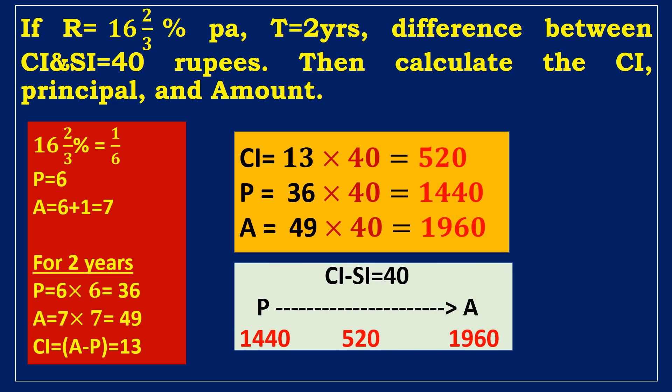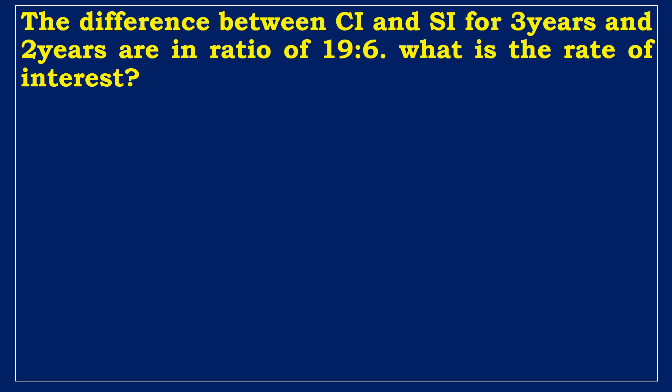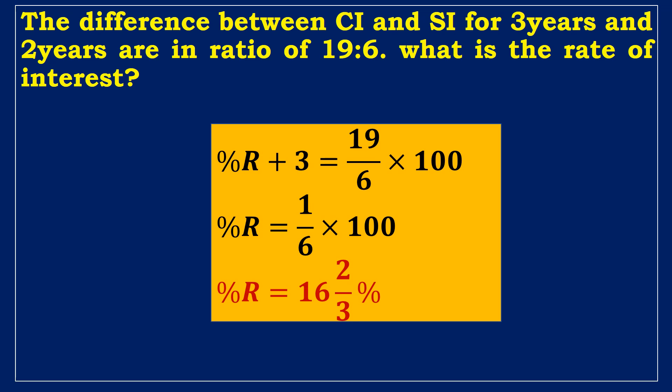Next example: The difference between compound interest and SI for 3 years and 2 years is in the ratio 19 to 6. What is the rate of interest? Using the shortcut: rate + 3 = (19/6) × 100. Simplifying, the rate of interest is 16⅔%.